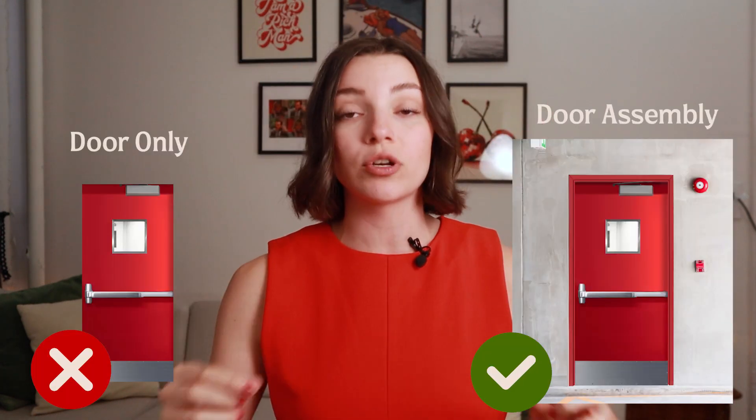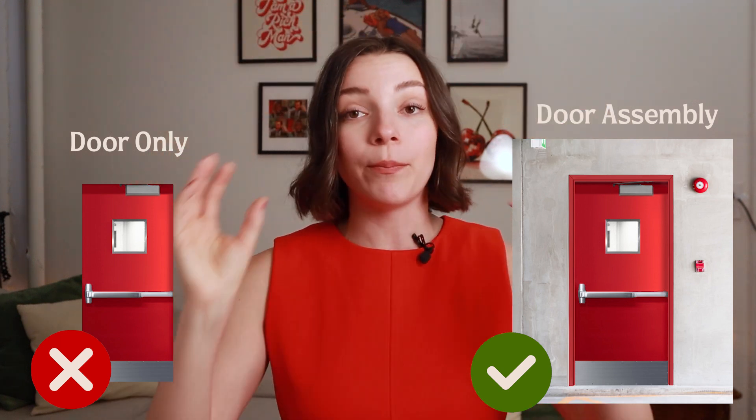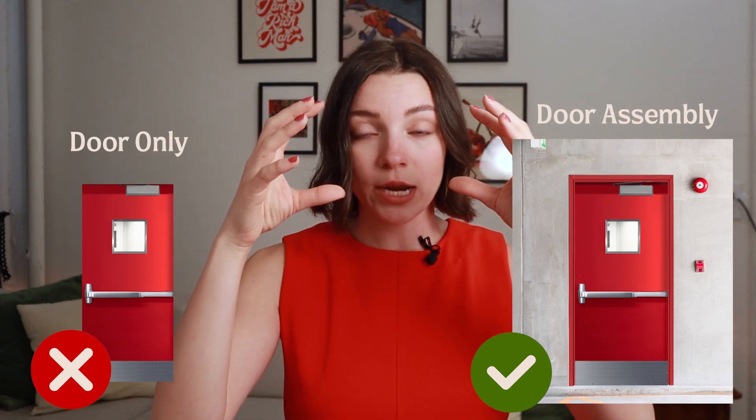Another thing to note is that the fire rating system only applies to construction assemblies — so a partition assembly, a door assembly, or a window assembly. When we say assembly, we mean not just the window itself, but the window, the trim, and the casing. Just like a door: the door panel, the door trim, the door casing — that is considered an assembly. It is a bunch of smaller construction parts put together to create one assembly.